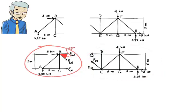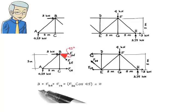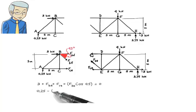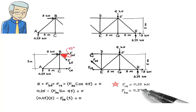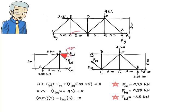Let's use the left free body diagram. Here are the three equilibrium equations. Sum of forces in the x-direction: 3 plus FBD plus FCE plus FBE cosine 45 equals 0. Sum of forces in the y-direction: 0.25 minus FBE sine 45 equals 0. Sum of moments about point B, assuming clockwise is positive: 0.25 times 5 minus FCE times 5 equals 0. Solving these equations, member CE carries a tensile force of 0.25 kN and BD carries a compressive force of 3.5 kN.